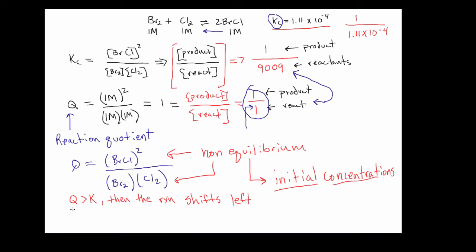And then from this, there's two other parameters here. If Q had been equal to K, so in other words, if I'd gone through here and I'd run the calculation like I demonstrated to you here, and instead of getting one, we'd gotten 1.11 times 10 to the minus fourth, then we know we would already be at equilibrium. And we'd be done. There would be no further calculations to complete.